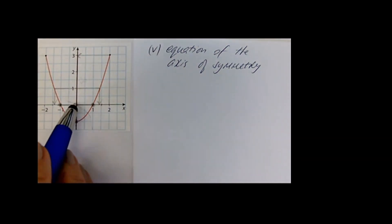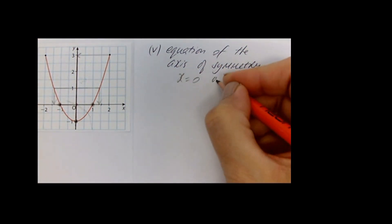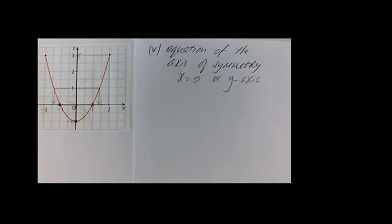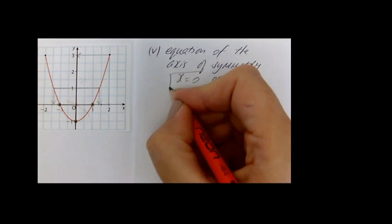The equation of the axis of symmetry: the axis of symmetry is where our mirror line would be, where we'd get one side as a reflection of the other — slap bang in the middle. That would be the y axis, which is the vertical line at x equals 0. So x equals 0, which is of course the y axis, is the equation of that line of symmetry.